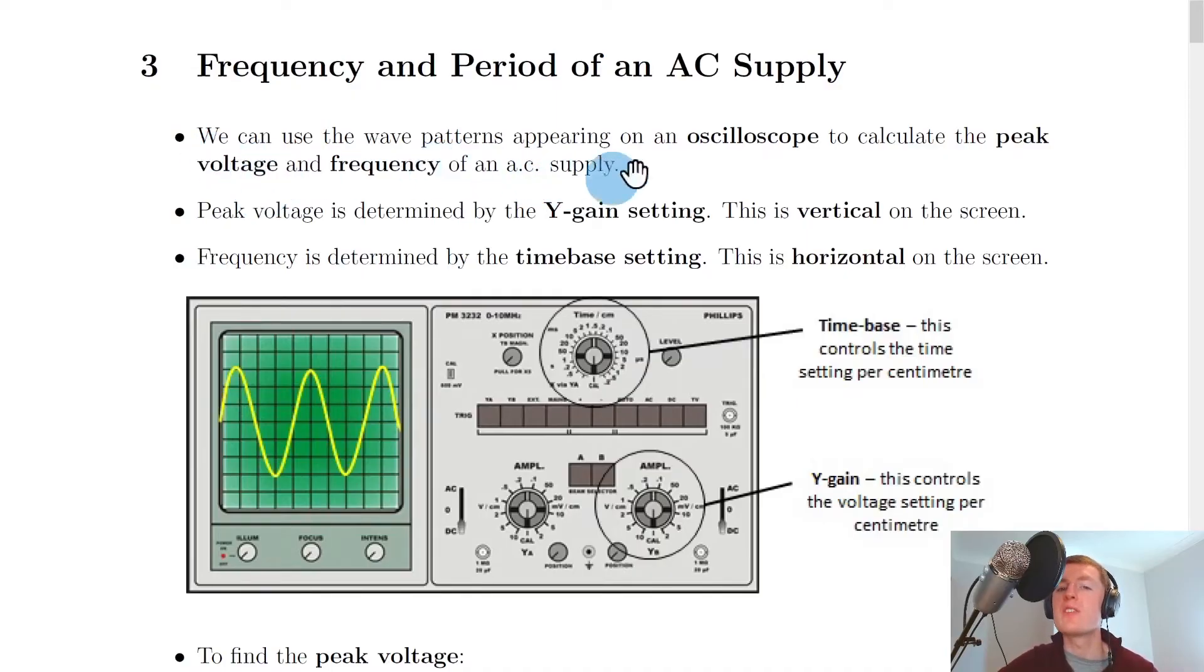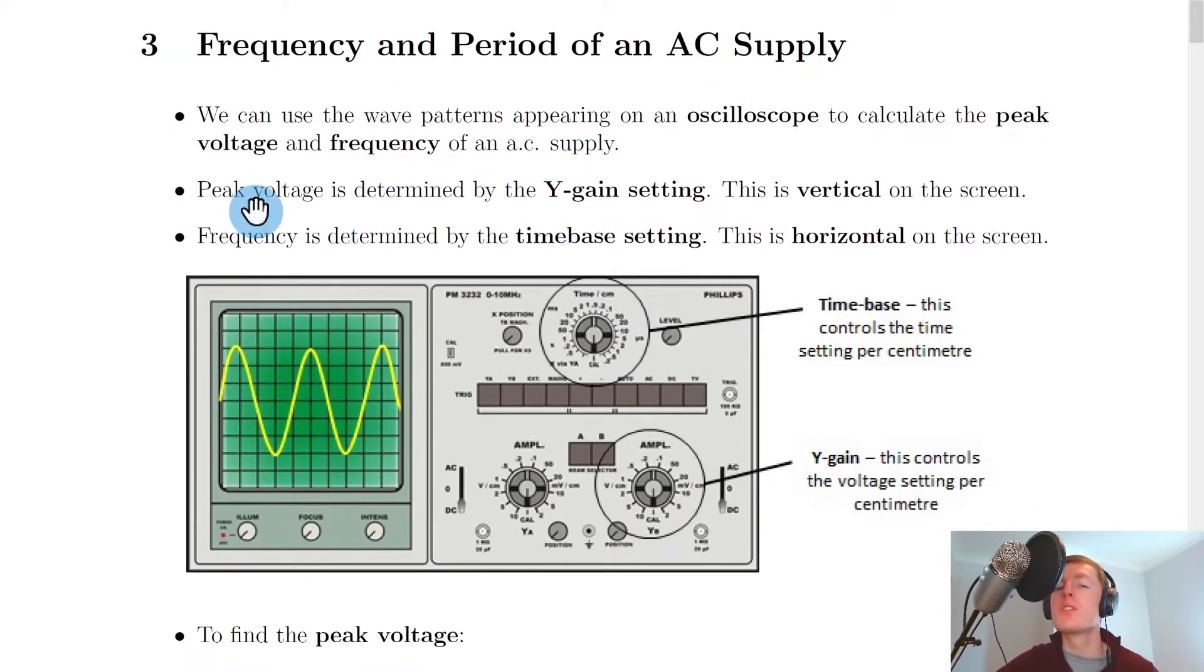We can use the wave patterns appearing on an oscilloscope to calculate the peak voltage and the frequency of an AC supply. The peak voltage is determined by the Y-gain setting on the oscilloscope, which is vertical on the screen. When trying to find the peak voltage, we're dealing with the y-axis of this screen, considering the divisions up and down.